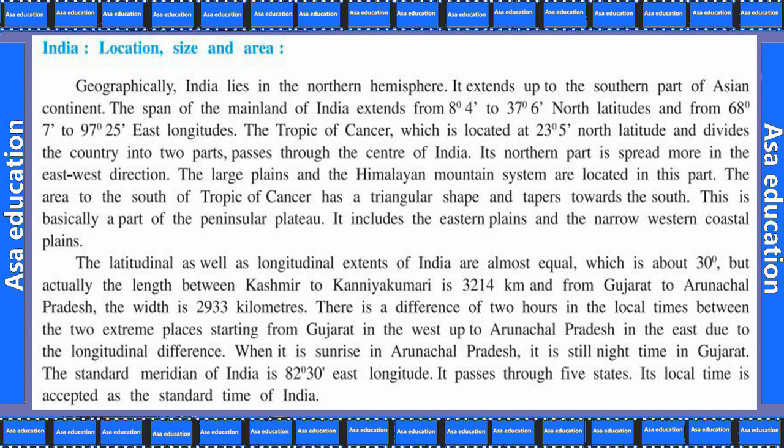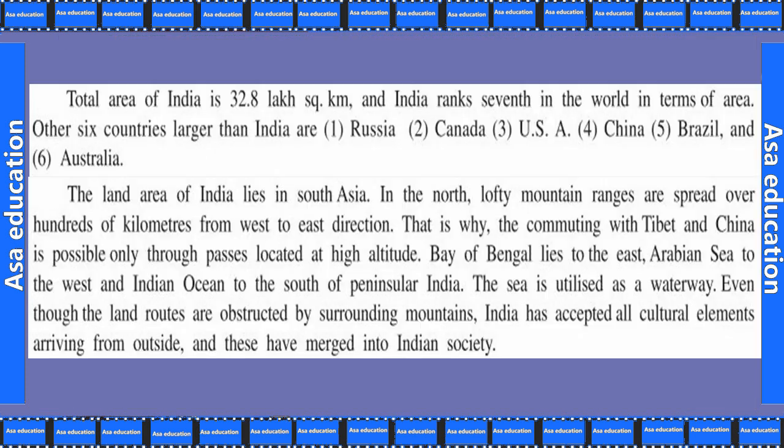The total area of India is 32.8 lakh square kilometers, and India ranks 7th in the world in terms of area. The other 6 countries larger than India are Russia, Canada, USA, China, Brazil, and Australia.